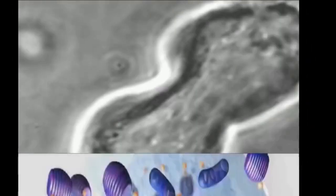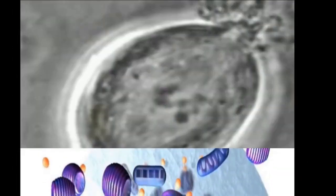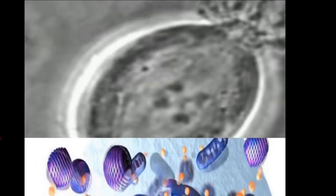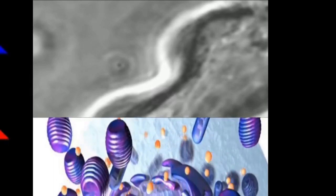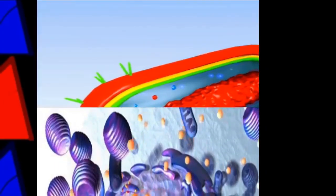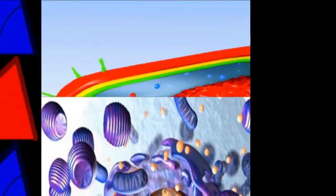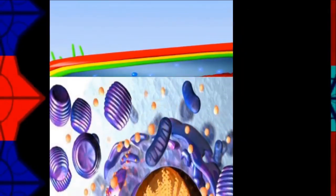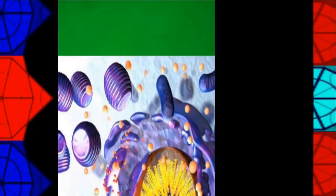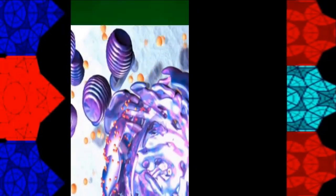Calcium channel blockers are used when other drugs fail to prevent angina, and also as antiarrhythmics and for treatment of HTN. MOA: prevents Ca2+ from entering the myocardial cell membrane, causing dilation of coronary and peripheral arteries, decreased force of contractions, decreased afterload, and decreased workload of the heart — resulting in decreased O2 demand.